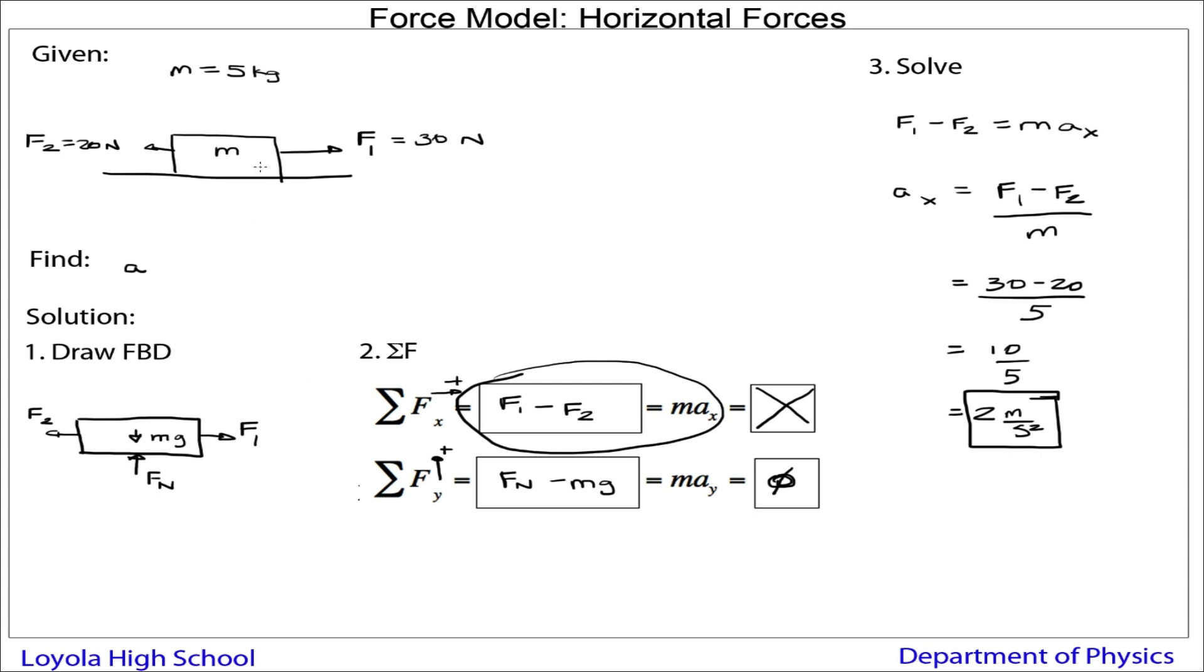So in the problem, we had two forces acting on this object of a known mass. We wanted to find the acceleration. So step one, we draw the free body diagram. We draw all the forces acting on the object.